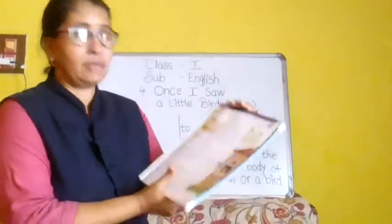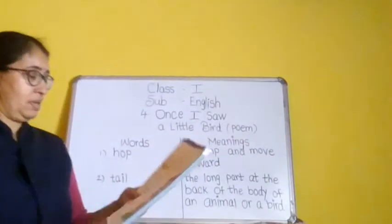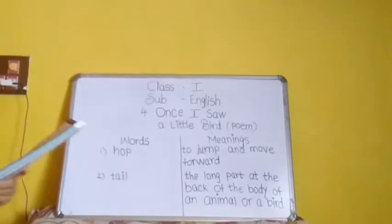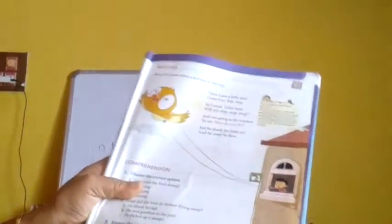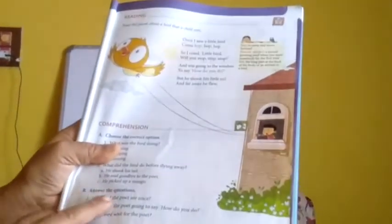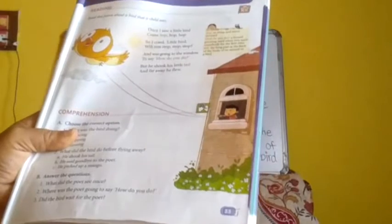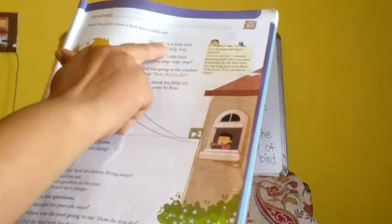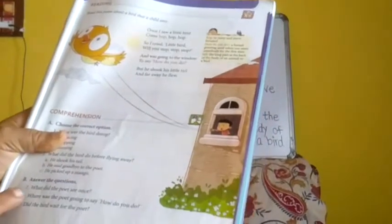Next, question answer. I am going to explain you. Answer the questions. The first question is: what did the poet see once? The poet saw a bird once. Once I saw a little bird, so the poet saw a little bird once.